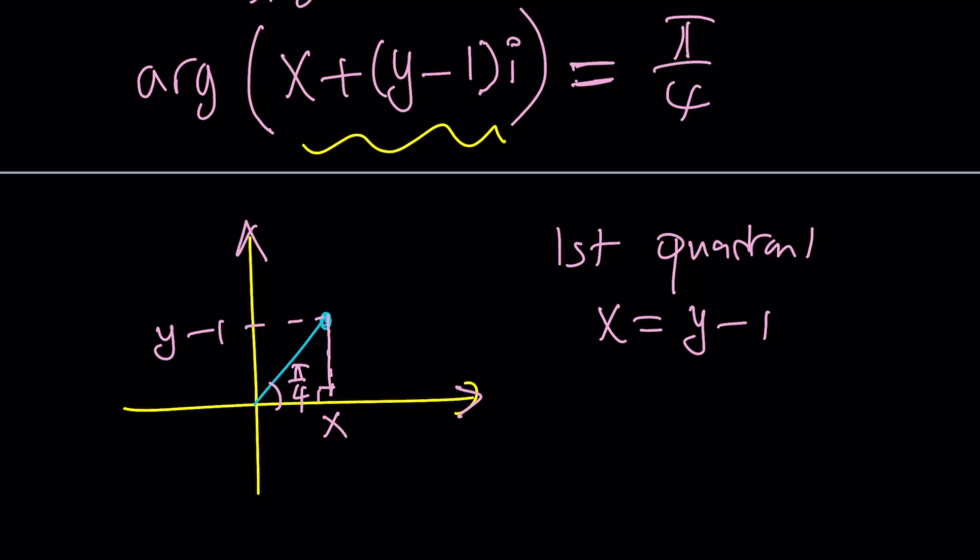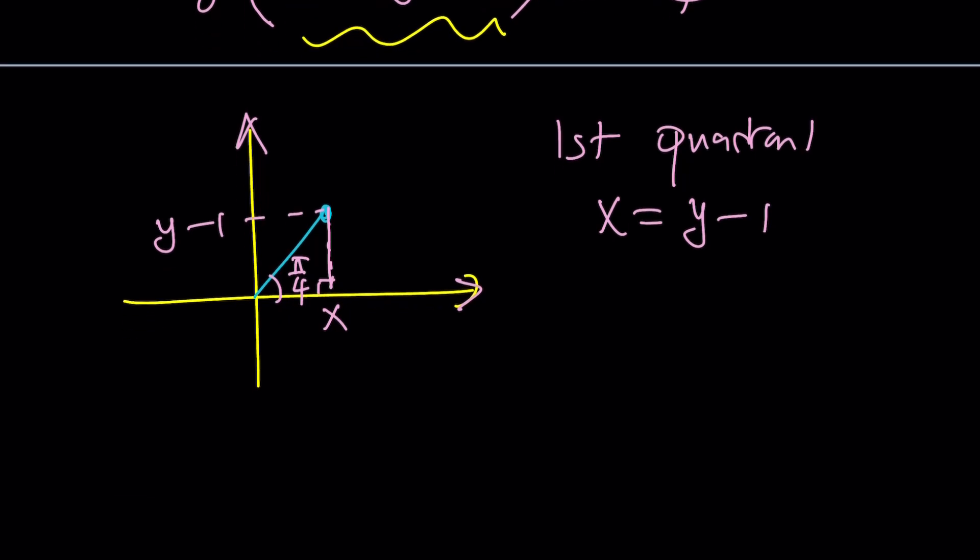Come on, people, right? That's what it is. So we get x equals y minus 1, which means what? It means that y minus 1 equals x, and y can be expressed as x plus 1.